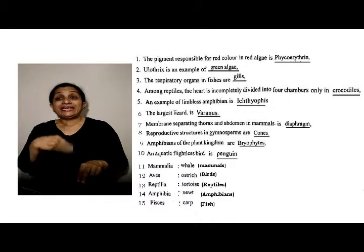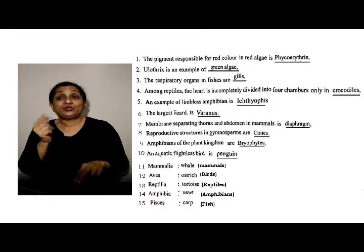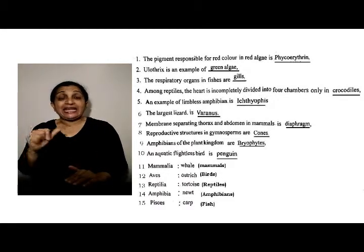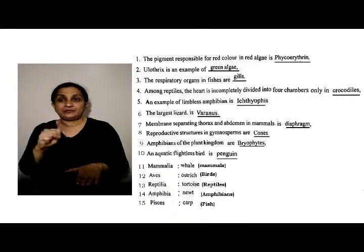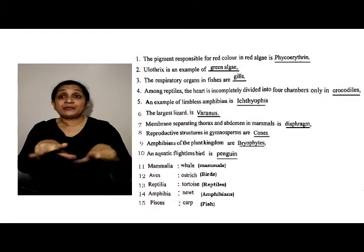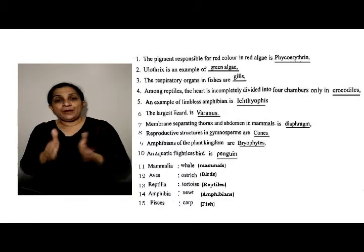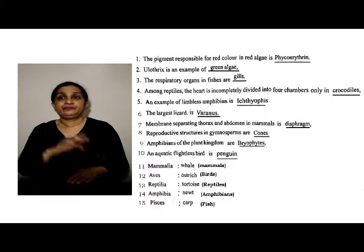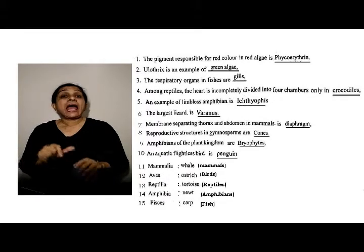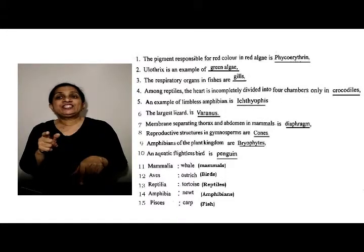The pigment that gives red color to red algae is phycoerythrin. Eulotryx is an example of green algae. The respiratory organ of the fish is gills. Among reptiles, the heart is divided into four chambers only in the crocodile.